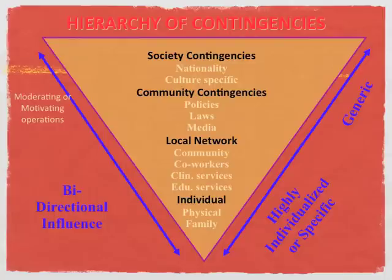Hovel's ecological model looks a lot like what you see depicted here. The similarity with the traditional ecological model is that the individual is still at the foundation or center, but what Hovel suggests is that the contingencies — meaning the reinforcement between different levels — go both ways. On the left-hand side you can see he describes bi-directional influence: the individual can influence the local network, which can influence the community, which can influence society, and vice versa. One of the strongest examples of this is the California Tobacco Control Program, which I'm going to discuss more in just a little bit.